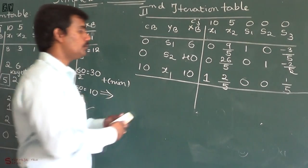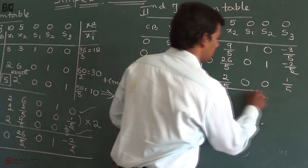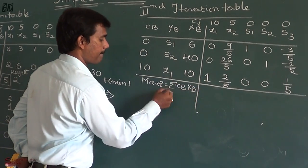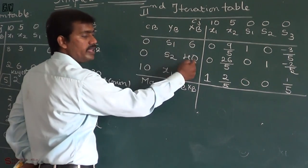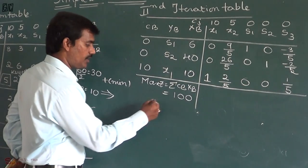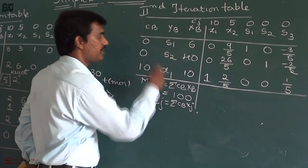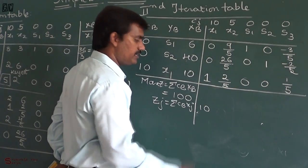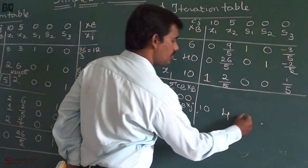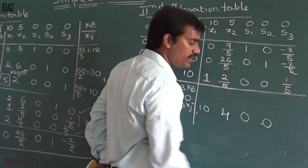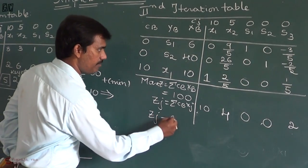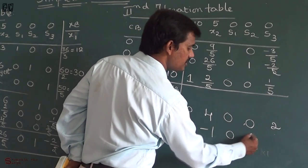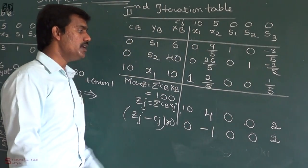Now we represent the three steps for the second iteration. Maximum z equals summation cb·xb: 0×6 + 0×40 + 10×10 = 100. For zj: z1 = 10×1 = 10; z2 = 10×(2/5) = 4; z3 = 0; z4 = 0; z5 = 10×(1/5) = 2. Optimality check: zj−cj gives 10−10=0, 4−5=−1, 0−0=0, 0−0=0, 2−0=2. The condition is still not satisfied — we have one negative value, minus 1.